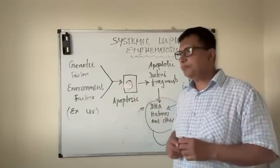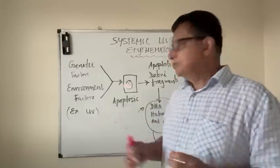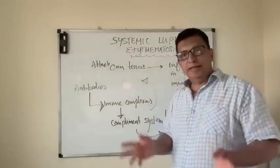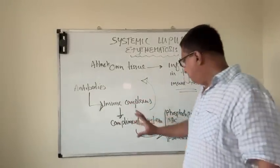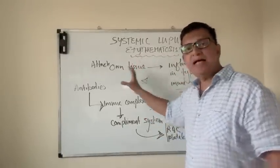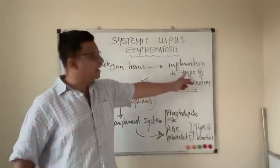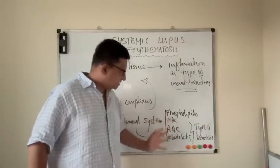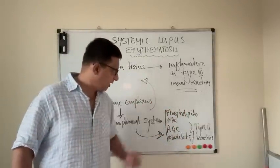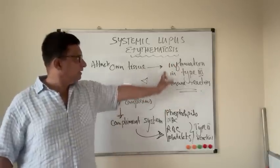The mostly affected parts are the skin, kidneys, heart, lungs, and joints — all these systems are affected by the inflammatory immune complexes. The antibodies also make immune complexes with the complement system and recognize the body's own tissue as foreign, attacking those tissues and causing inflammation. This is mainly a type 3 immune reaction, though they can also attack white blood cells, red blood cells, and platelets causing a type 2 immune reaction.